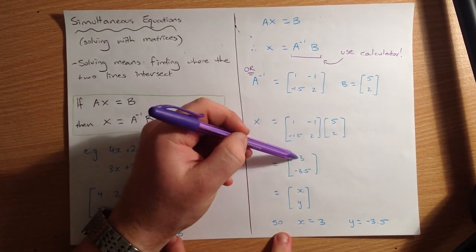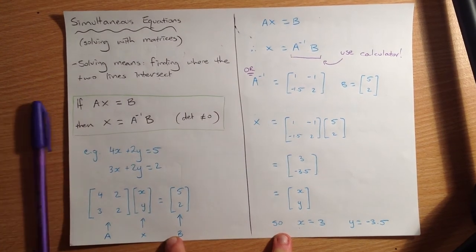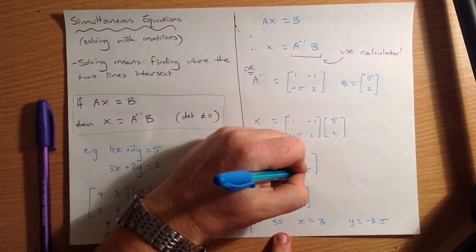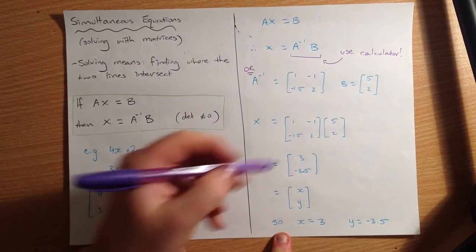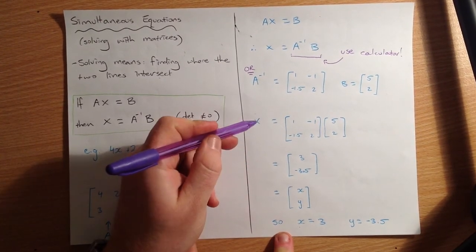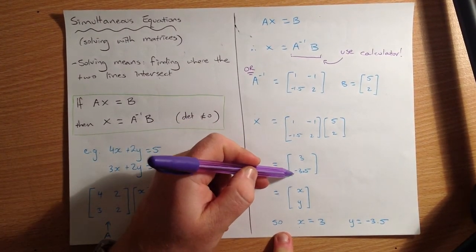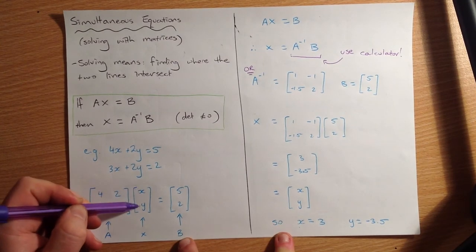And then when you multiply those two, it'll equal 3, negative 3.5. That's 3.5. And then, so that just says, because X equals 3, negative 3.5, and over here our X matrix was X and Y.